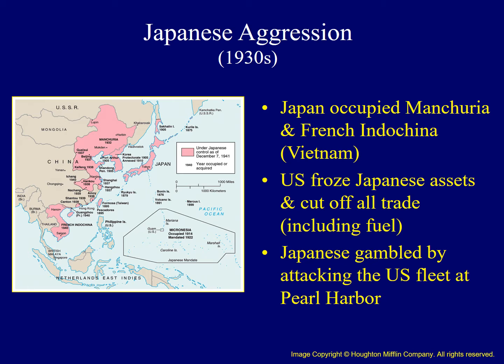Just as Germany had tried to expand its territory in the 1930s, Japan did the same thing in the Pacific. Japan occupied Manchuria, which was part of China, in order to gain access to raw materials like coal, oil, and timber. They also occupied the French colony of Indochina, also known as Vietnam. In response, the United States froze all Japanese assets and cut off all trade, including fuel, to Japan. The Japanese responded with a gamble — they gambled that an attack on Pearl Harbor would be a knockout punch, demoralizing the United States while destroying the Pacific Fleet. They caught the Americans completely by surprise.